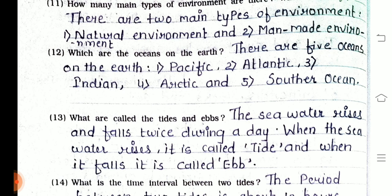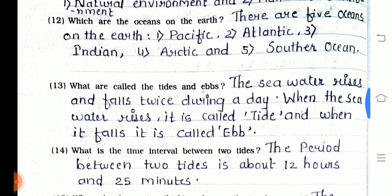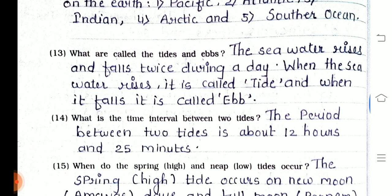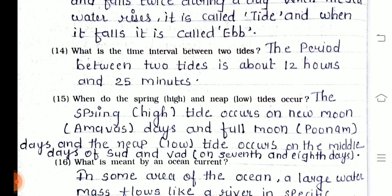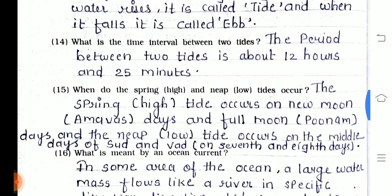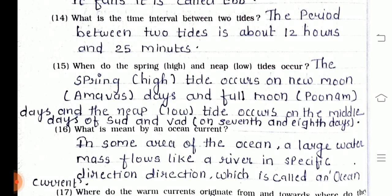Twelfth one — which are the oceans on the earth? There are five oceans on the earth: Pacific, Atlantic, Indian, Arctic, and Southern Oceans. Thirteenth one — what are tides and ebbs? The sea water rises and falls twice during a day. When the sea water rises it is called tide, and when it falls it is called ebb. Fourteenth one — what is the main interval between two tides? The period between two tides is about 12 hours and 25 minutes.